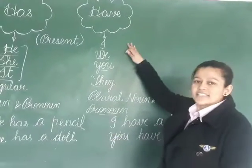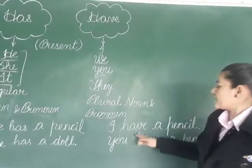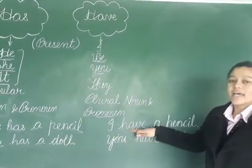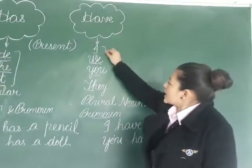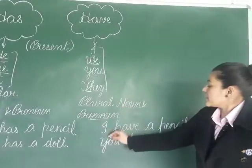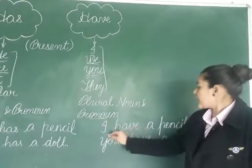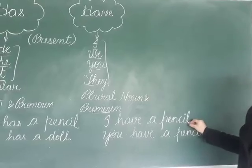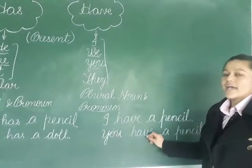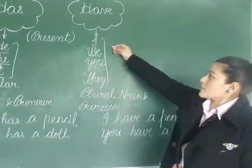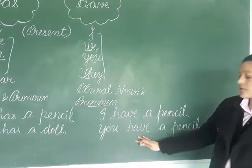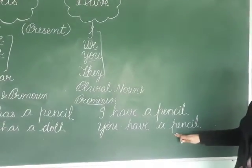Now, here are some examples of 'have'. First example: 'I have a pencil.' With I, we, you, and they, we use 'have'. So 'I have a pencil' means I possess a pencil. Next: 'You have a pencil.' We use 'have' with I, we, you, and they.